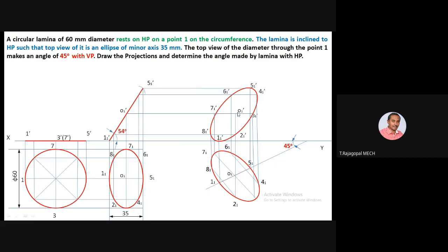This is the final answer — the ellipse is complete. The question asked to determine the angle made by the lamina with HP. Use a protractor to measure the inclination: it is 54 degrees. The angle made by the lamina with HP, theta, equals 54 degrees. This concludes the problem of the projection of a circular lamina.